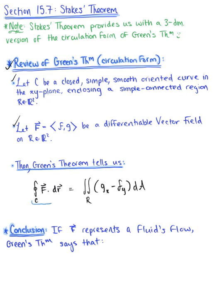So again, this line integral gives us circulation along the curve C. And the double integral here is giving us the sum of the curl of the vector field over all the points of R — the sum of the curl of our vector field along all points in R.